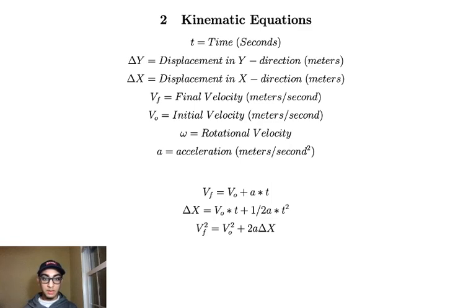So, these are our three kinematic equations that we're going to use. The first one is the final velocity is equal to the initial velocity plus acceleration times time. This one is really similar to y equals mx plus b for the slope. The second one is the displacement is equal to the initial velocity times time plus half the acceleration times time squared. And the last equation I'm going to use is the final velocity squared is equal to the initial velocity squared plus two times the acceleration times displacement.